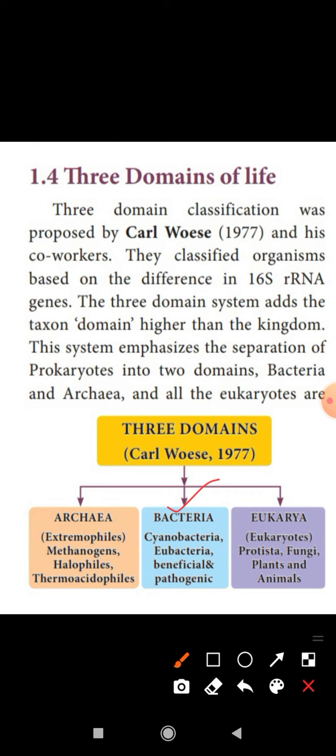The next domain is Bacteria. Bacteria are also prokaryotic organisms — they do not have a definite nucleus or nuclear membrane. Their ribosomes are 70S units, which is characteristic of prokaryotic organisms. Bacteria are classified as beneficial bacteria, harmful bacteria, and pathogenic bacteria, as well as photosynthetic bacteria and chemosynthetic bacteria. Some bacteria live in our bodies.